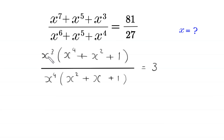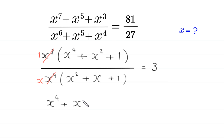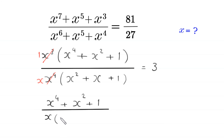This is equal to 81 divided by 27, which is 3. Now if we divide x cubed in the numerator by x cubed we get 1, and dividing x to the power 4 in the denominator by x cubed we get x. So we are left with x to the power 4 plus x squared plus 1, divided by x times x squared plus x plus 1, equal to 3.